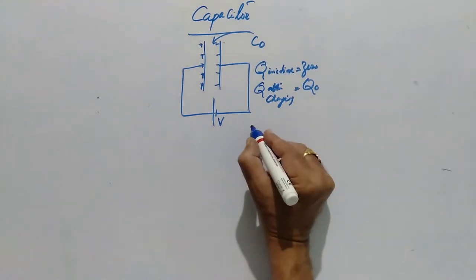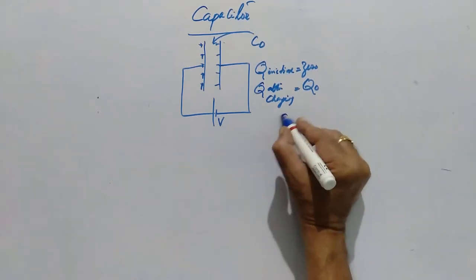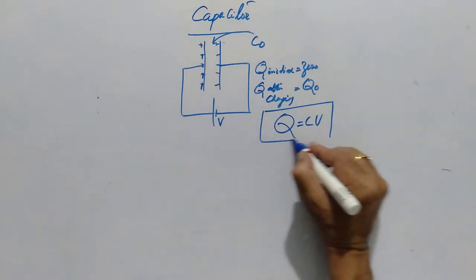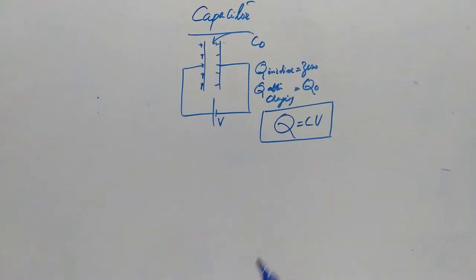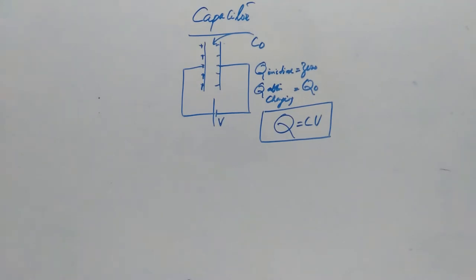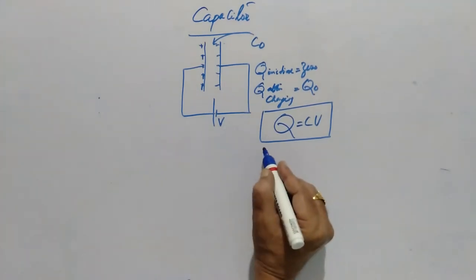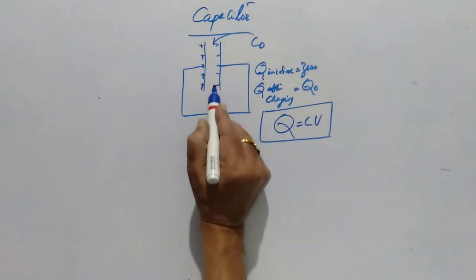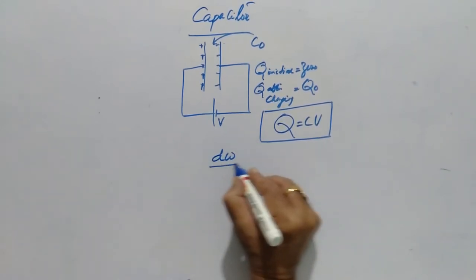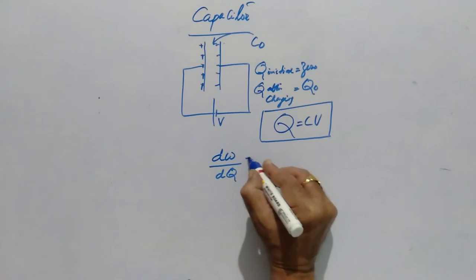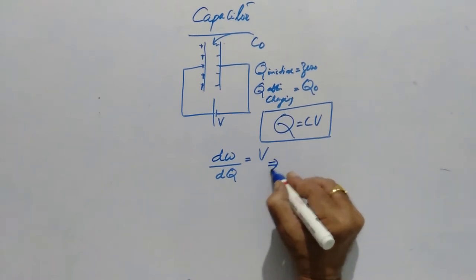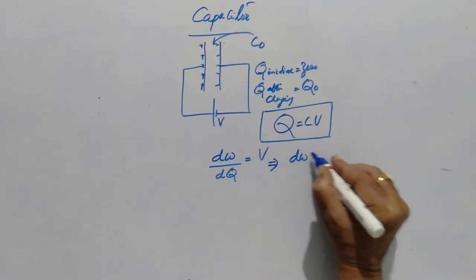To calculate the energy, we take the help of the equation. Remember, all the time we take Q = CV, that is the pivot equation for any capacitor. Second thing we must know: what is potential? The potential is nothing but the work done in moving a unit positive charge from one place to another place.